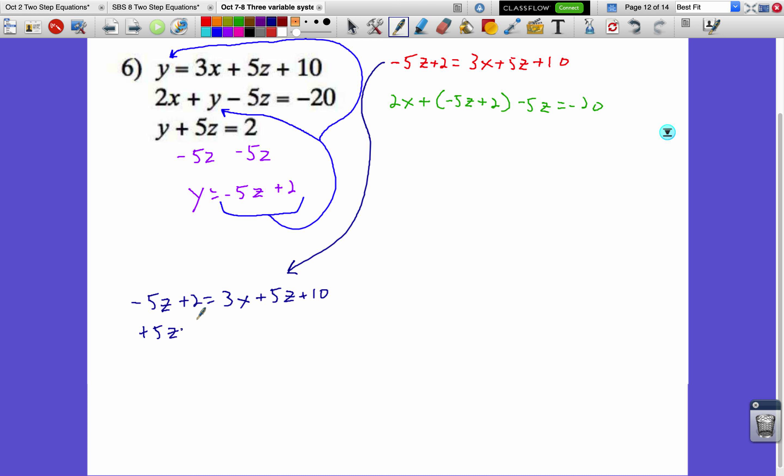All right, let's do a little bit of combining like terms. Add 5z to both sides in this one. Maybe subtract 10 from both sides. Combine it with this 2 over here. Here we get now negative 8 equals 3x plus 10z. And those I moved over here. So there's something similar on this. First, we'll drop these parentheses. So it's now 2x minus 5z plus 2 minus 5z equals negative 20. Add together these 5z's and maybe subtract 2 from both sides. I get 2x minus 10z equals negative 22.